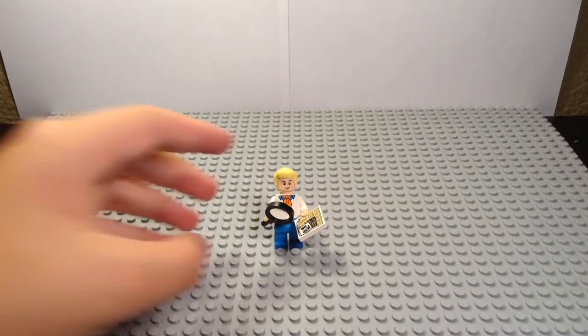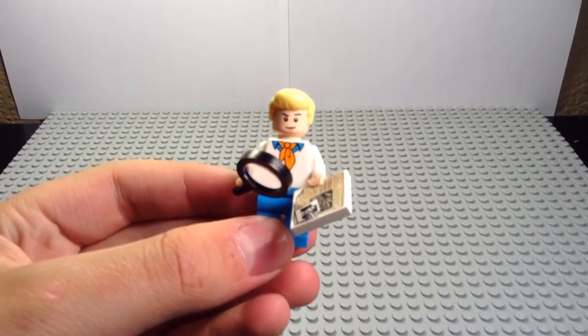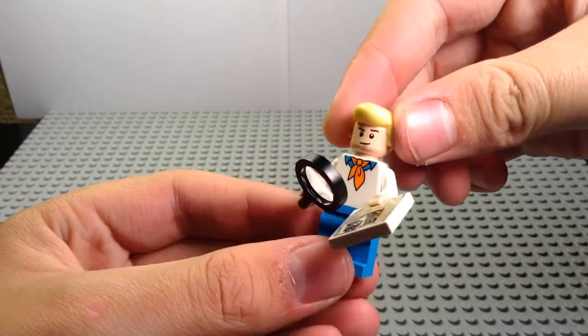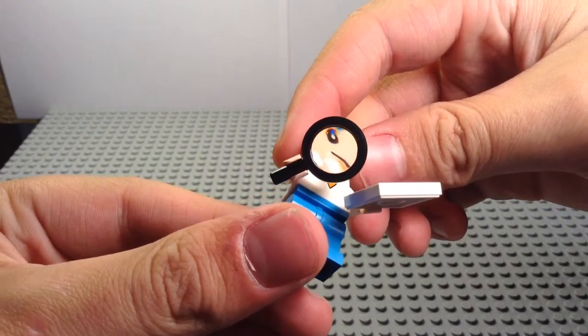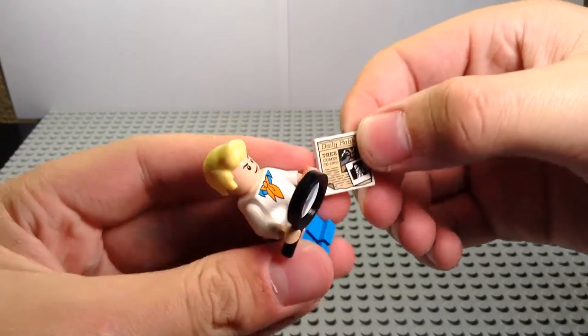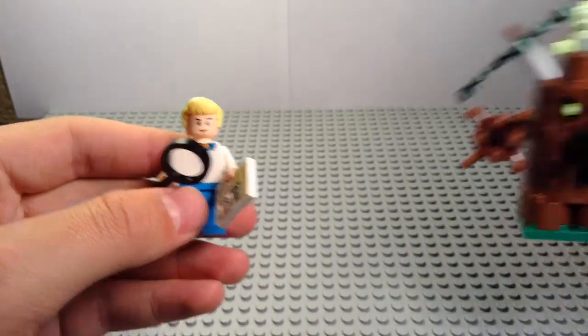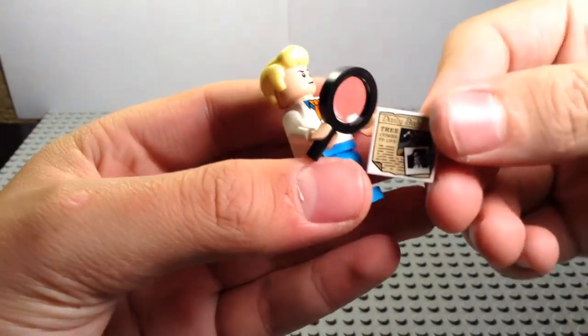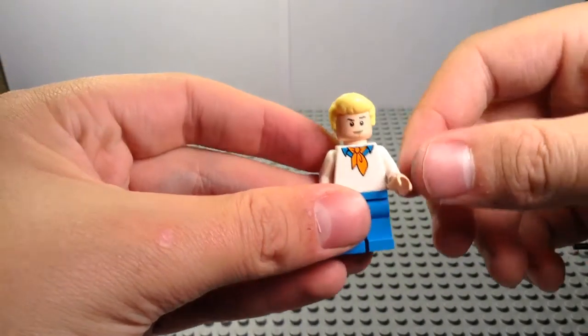Alright guys, for our first minifigure we have Fred. I think Lego did a great job bringing the Scooby-Doo characters to life. I like the props they come with, especially Fred with his magnifying glass and the newspaper clipping, the Daily Babbler, showing 'tree comes to life.' The tree is the antagonist in this set, and they're trying to find out who it is, what it is—the whole solving the mystery, finding the clues.